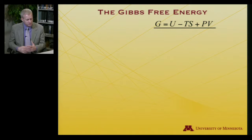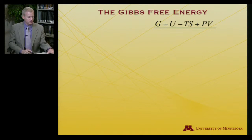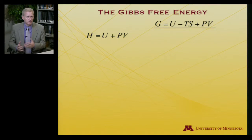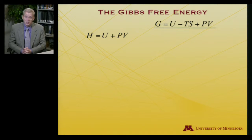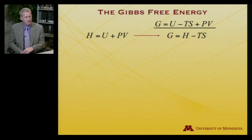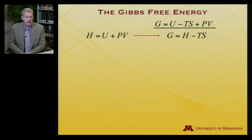Let's come back to the Gibbs free energy. Here's the definition: G equals U minus TS plus PV. Given that enthalpy H equals U plus PV, we can also write G equals H minus TS — a form probably more familiar from early chemistry studies.